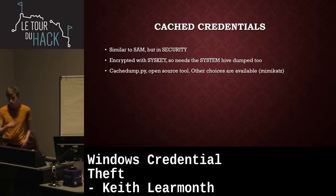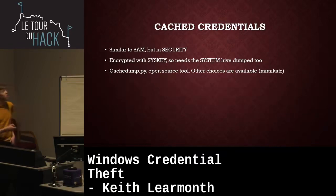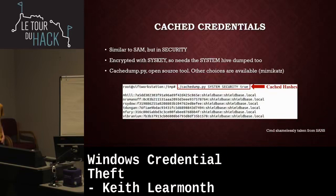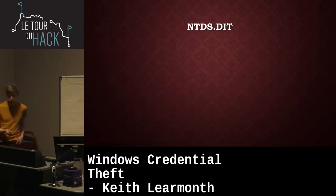Dumping those cached hashes is very similar to dumping the SAM — they're also encrypted with syskey but stored in the SECURITY hive instead. You give the tool the SYSTEM hive and the SECURITY hive you've exfiltrated, and it gives you hashes. These are not NTLM hashes — they're a different type, not very useful other than brute-forcing to recover a plaintext password, though you can use them for some of the techniques applicable to NTLM hashes.